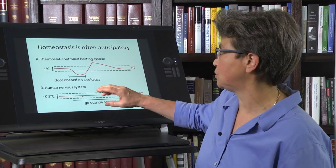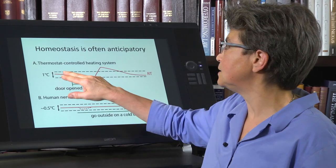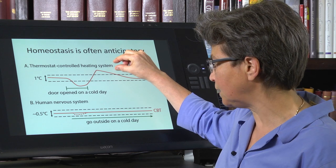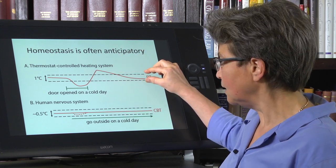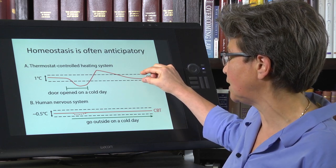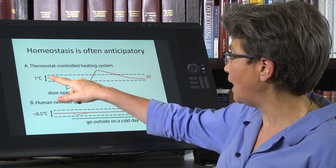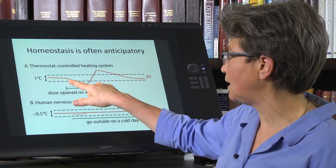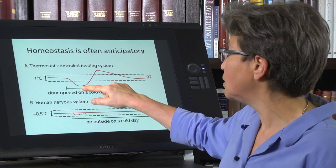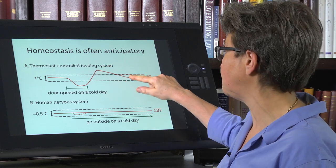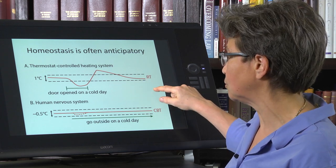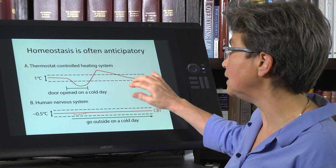So just to belabor this point, this is the difference between even a smart thermostat controlled heating system and the human nervous system. Let's say that the accepted range in the heating system is about a degree centigrade, and that you open the door on a cold day. Only when it actually deviates outside of that acceptable range does the heat kick in. And then it passively dissipates and the heat will only kick in after the temperature of the room leaves the acceptable range.